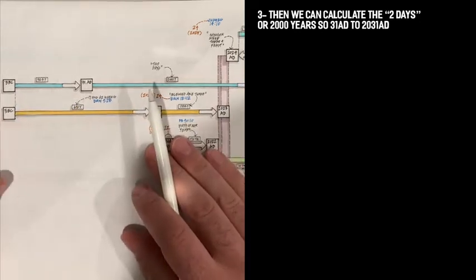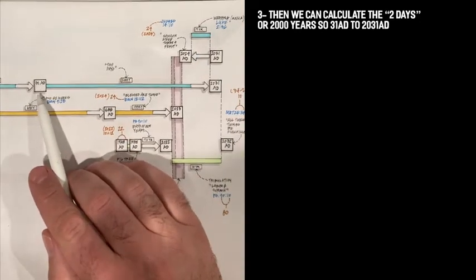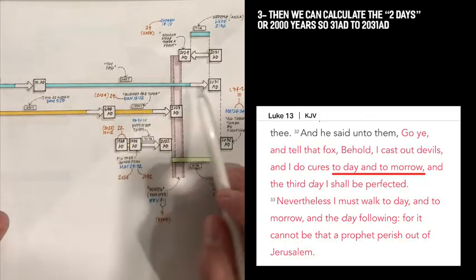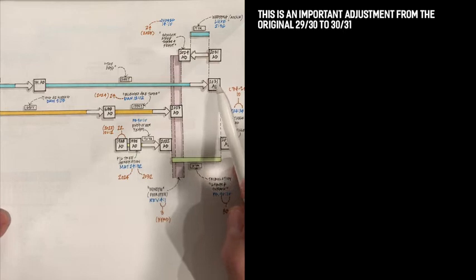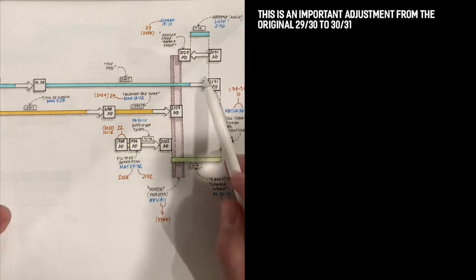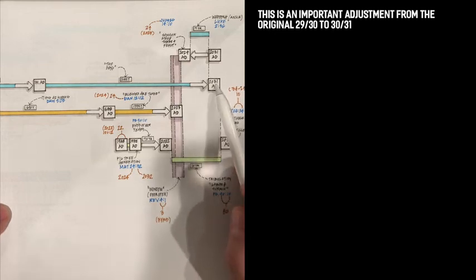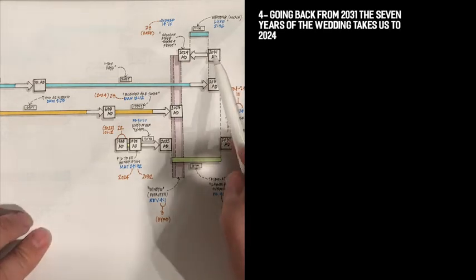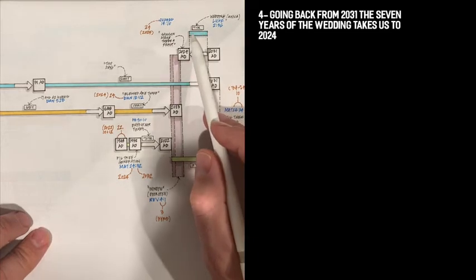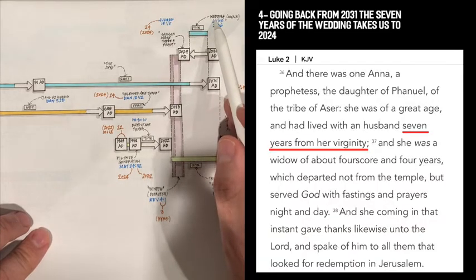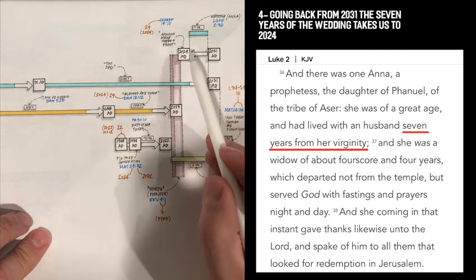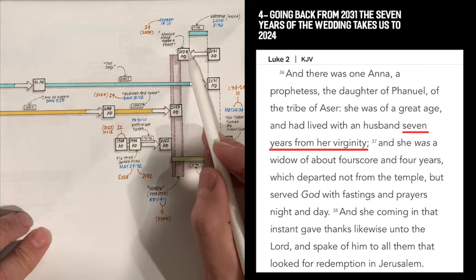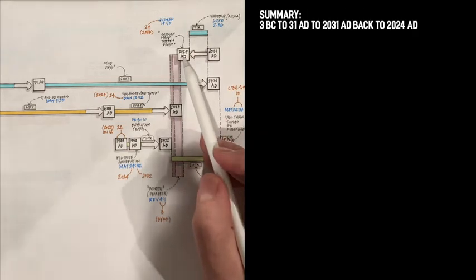Once the 3 BC is established and the 31 AD is established, we're going to add the 2,000 years all the way to 2031. This is a substantial adjustment from my original 29 to 30. This will be now 30 to 31. But it works really well. The 31 then subtracting the 7 years of the wedding - that's the Luke 2:36, Anna - that's the 7 years of the wedding will take us to 2024.